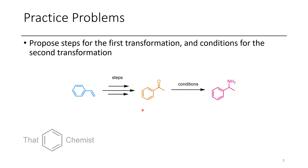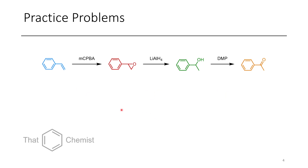In the next problem we have this multi-step synthesis from styrene to acetophenone and finally to phenylethylamine. Initially what I would do is take this styrene and treat it with MCPBA to get an epoxide. This epoxide can then be opened at the primary position to give us this phenylethanol product, which can then be oxidized to acetophenone using an oxidant such as DMP.